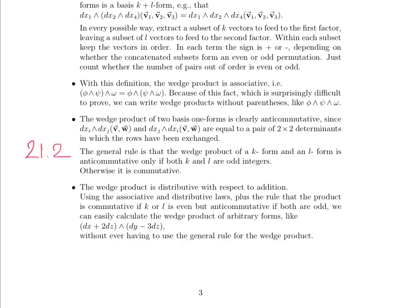Last fact is that the wedge product is distributive with respect to addition. Using the associative and distributive laws plus the rule that the product is commutative if k or l is even but anticommutative if both are odd, we can easily calculate the wedge products of arbitrary forms like dx + 2dz wedge dy - 3dz without ever having to use that general rule for the wedge product. You'll have a lot of practice computing these, and that's really the focus of the beginning of this module. I know everyone is craving to understand what are these useful for, why am I doing this, and I fully appreciate that, and we will get to it, I promise. But the important part is that we get this under our belts first, introduce another important tool, and then put these together to see how these concepts relate to each other within the lens of differential and integral calculus.